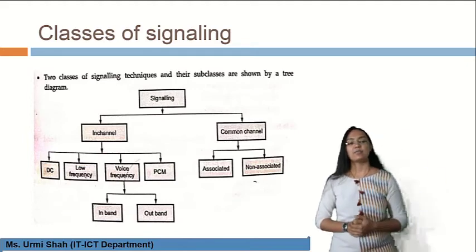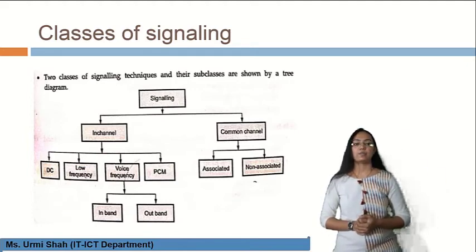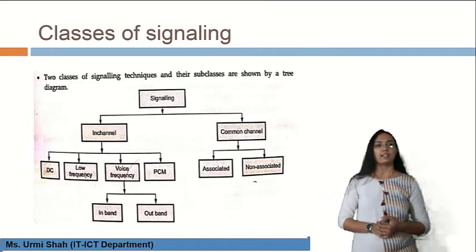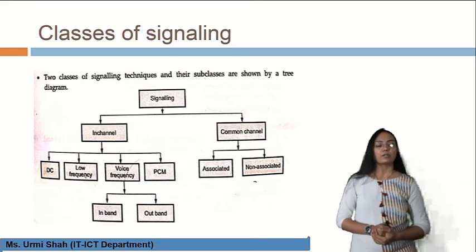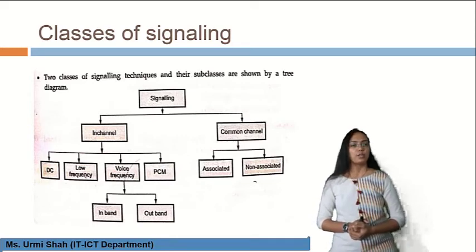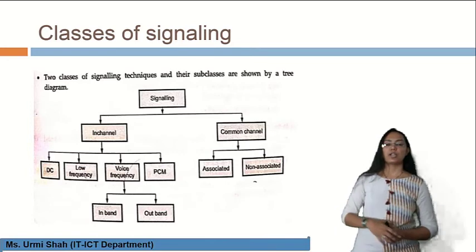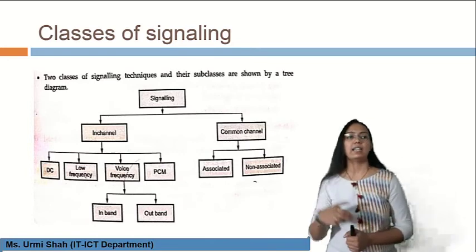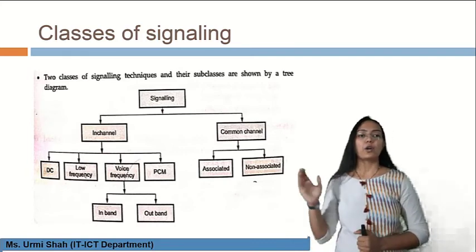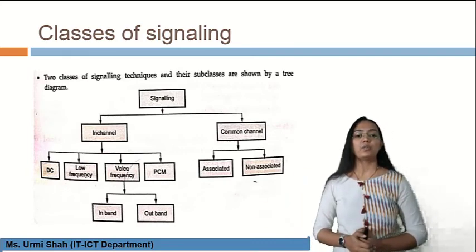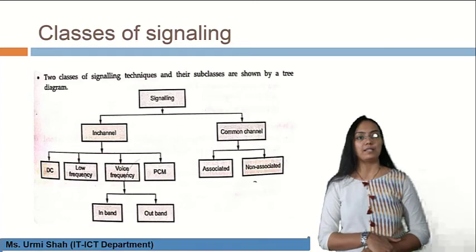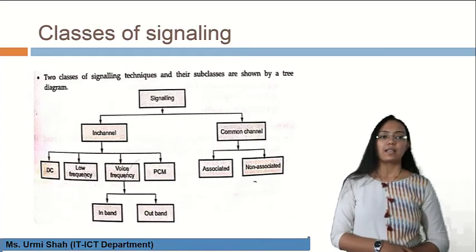The next classification is for common channel signaling, which has two divisions: associated and non-associated signaling. We are going to learn in-channel and common channel signaling in detail in the upcoming next session, where we will discuss the role of each of these classes and schemes in signaling techniques.